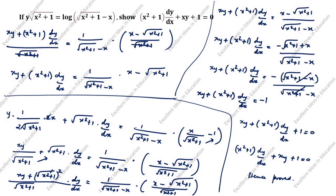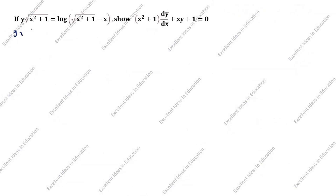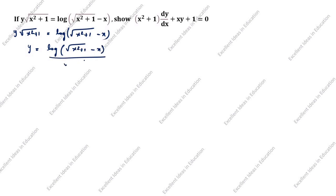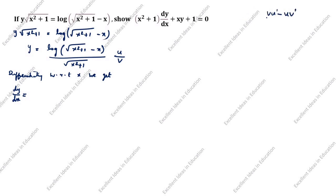Second method: what is given is y√(x²+1) = log(√(x²+1) − x). We rearrange to get y = log(√(x²+1) − x) / √(x²+1). Differentiating with respect to x using the quotient rule u/v formula: (v·u' − u·v') / v².